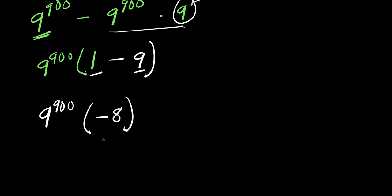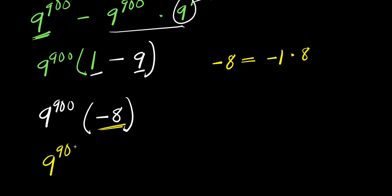Let's evaluate further. I can rewrite negative 8 as a product of negative 1 times 8, so I have 9 to the power of 900 times negative 1 times 8.